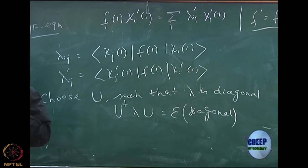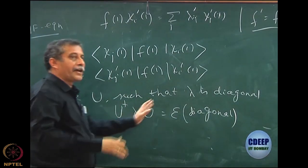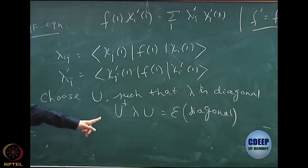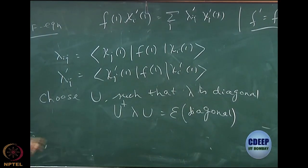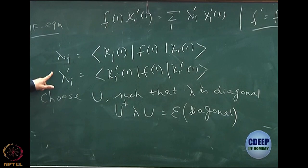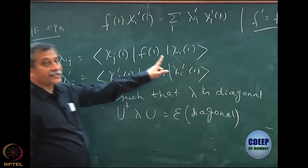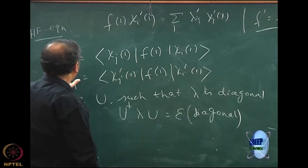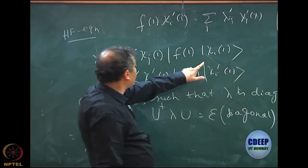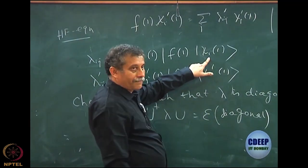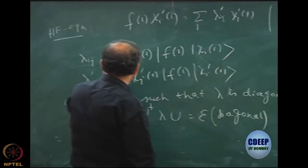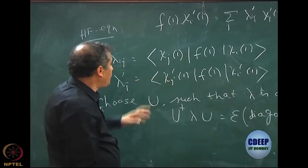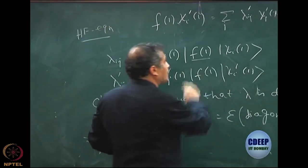You can always write U λ U†, it does not matter whichever way you want to write. This is always possible because this is a matrix, and not only that — this is a Hermitian matrix. I must make sure you understand this is a Hermitian matrix. If you take the dagger of this, you will see that chi_i star will come here and this will become lambda_j.